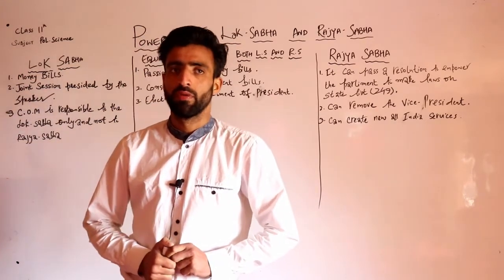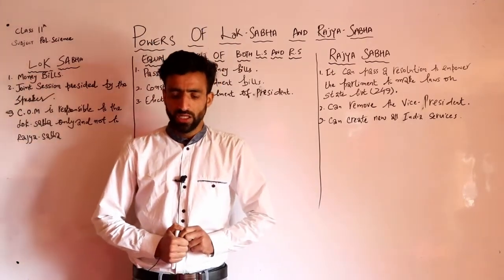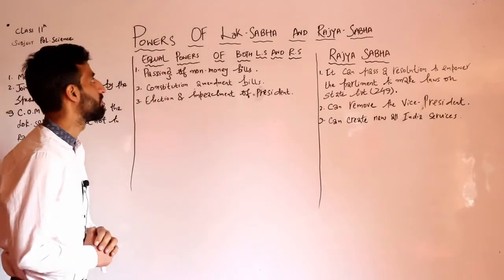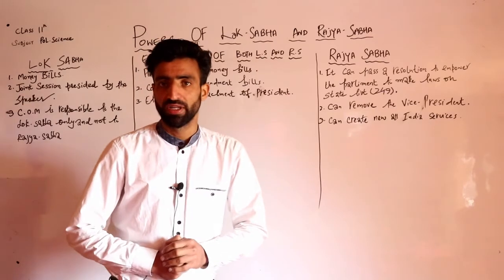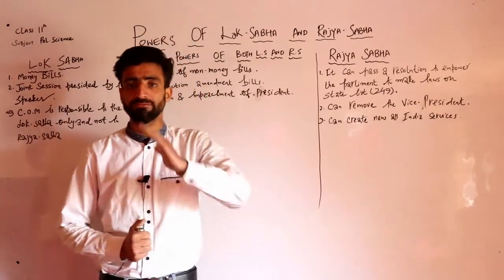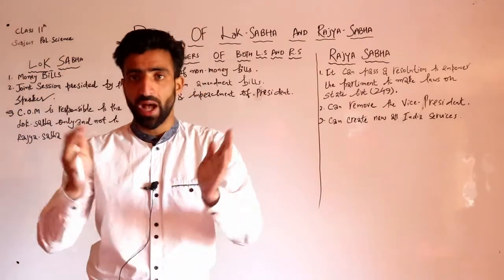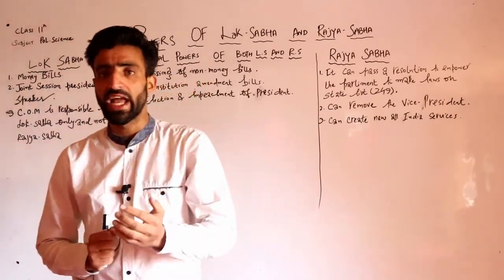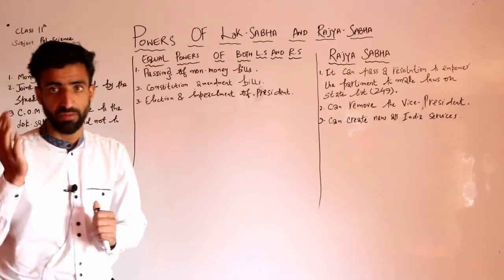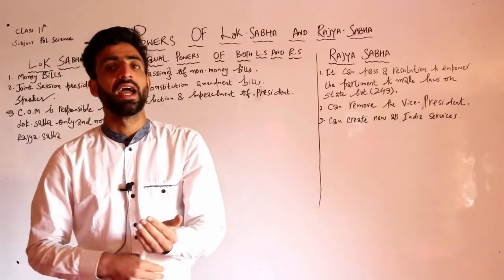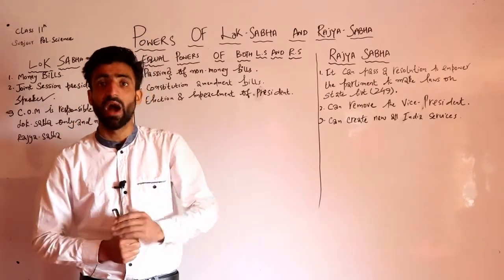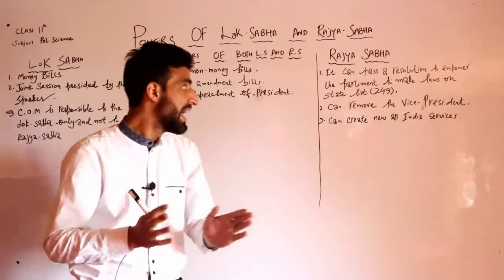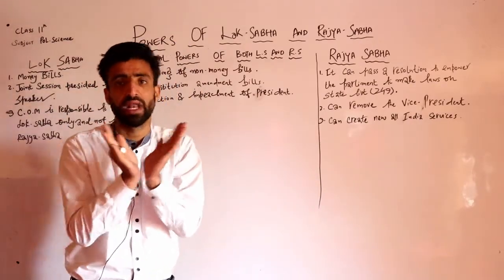Assalamu alaikum students, I hope you are doing well. So today, aaj is lecture mein hum padhne waale hain powers of Lok Sabha and Rajya Sabha. As far as the powers of Lok Sabha and Rajya Sabha are concerned, kuch spheres mein different hai jahan pe khali Lok Sabha ke paas zyada power hai. Kuch aaise areas hain jahan pe Rajya Sabha ke paas zyada power hai aur kuch aaise spheres hain jahan pe dono equal footing pe hain, dono ke paas barabar powers hain.